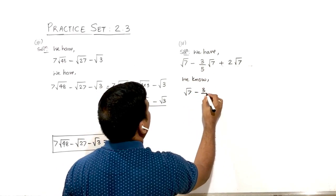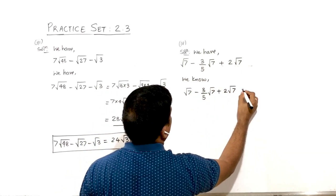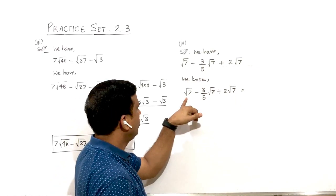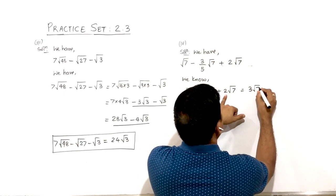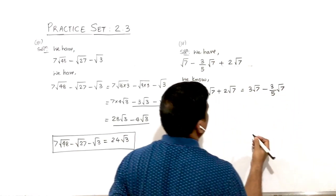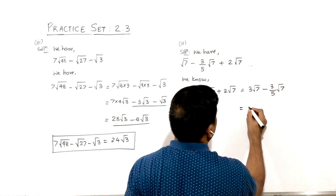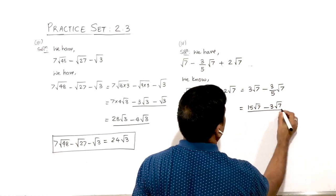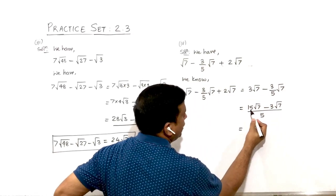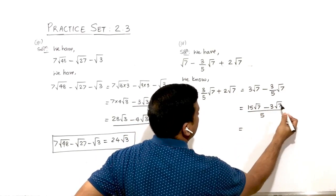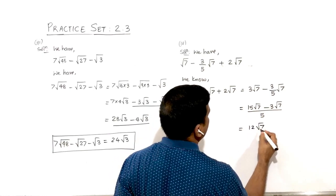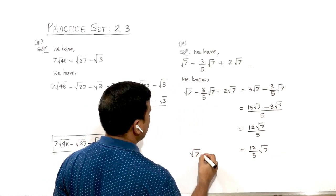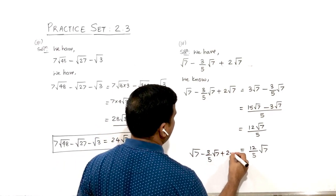For the fourth one: √7 − 3/(5√7) + 2√7. The first and third terms are like surds: √7 + 2√7 = 3√7. So we have 3√7 − 3/(5√7). Cross-multiplying: (5 × 3√7 − 3)/(5) = (15√7 − 3)/(5√7). Simplifying the numerator: 15 − 3 = 12, giving 12√7/5 as the answer.